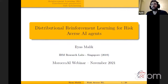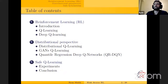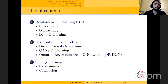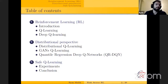Today's talk is about distributional reinforcement learning for risk-averse AI agents. This project is part of my research internship at IBM Research Labs Singapore in 2019. We'll start by introducing reinforcement learning, giving the key concepts and key mathematical frameworks. Then we'll talk about the main algorithms used in the field, then the distributional perspective of RL, which is quite recent research that started around 2017. We'll talk about three approaches, focusing more on the last one, and finally show how we leveraged those algorithms to implement risk-averse AI agents.